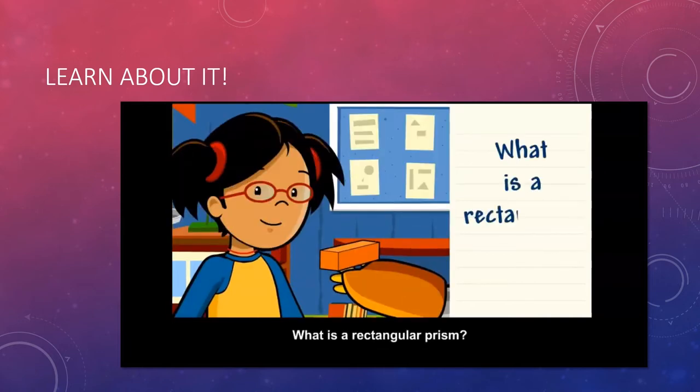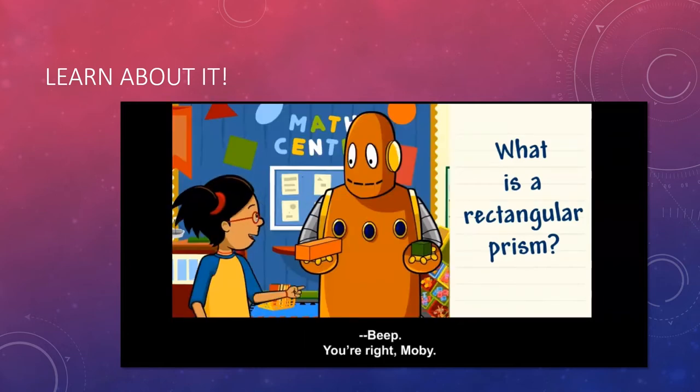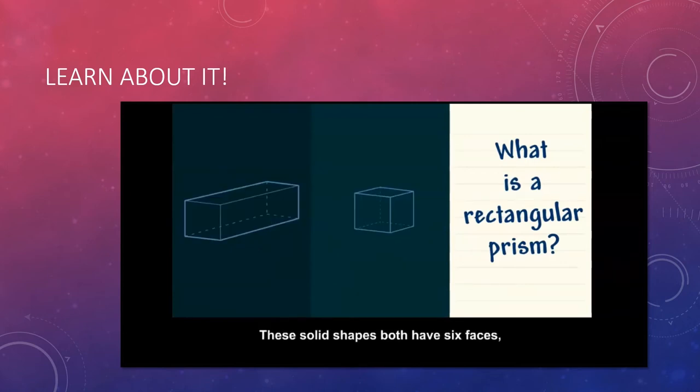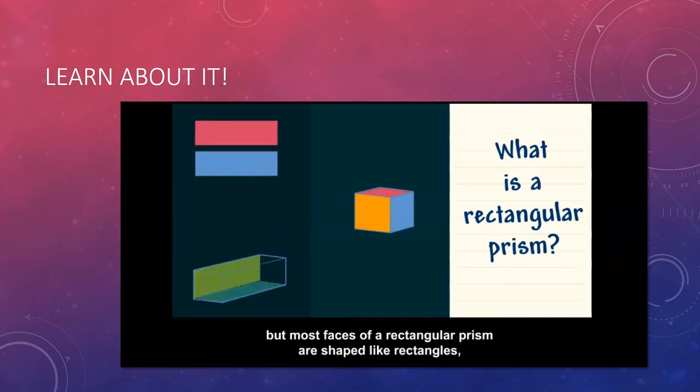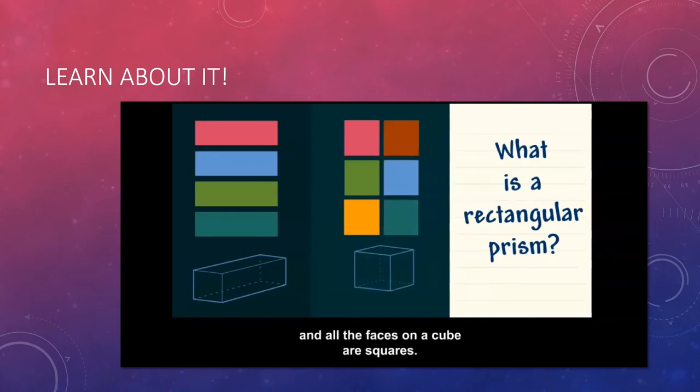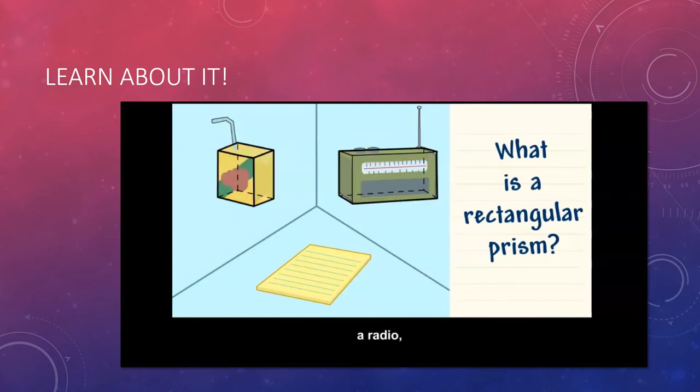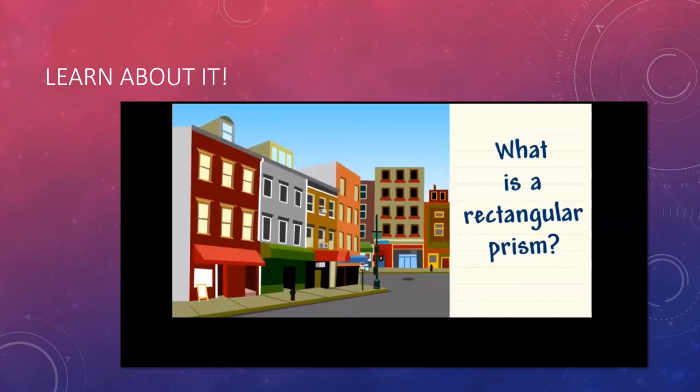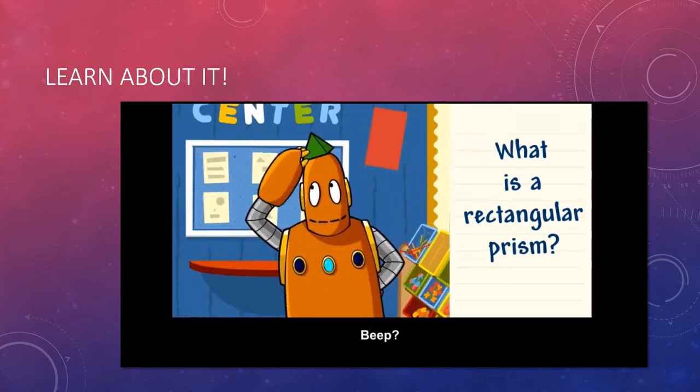Plenty of things are shaped like cubes like an ice cube, a number cube, or a box of tissues. What is a rectangular prism? Just like a cube, a rectangular prism has 12 edges and eight corners or vertices. You're right Moby, these solid shapes both have six faces, but most faces of a rectangular prism are shaped like rectangles and all the faces on a cube are squares. Tons of things are shaped like rectangular prisms like a juice box, radio, and even a thin piece of paper. Some buildings are shaped like rectangular prisms too.